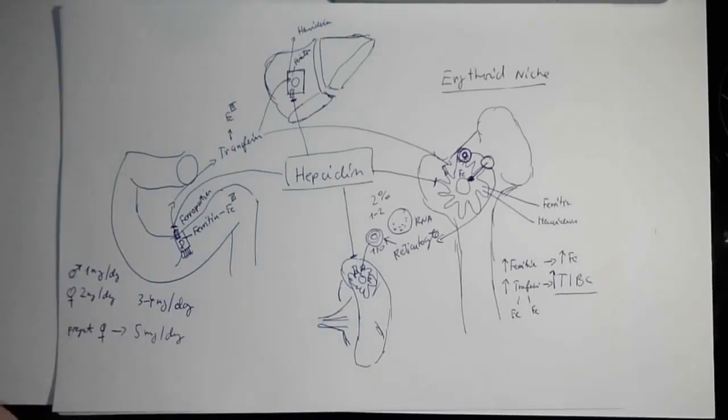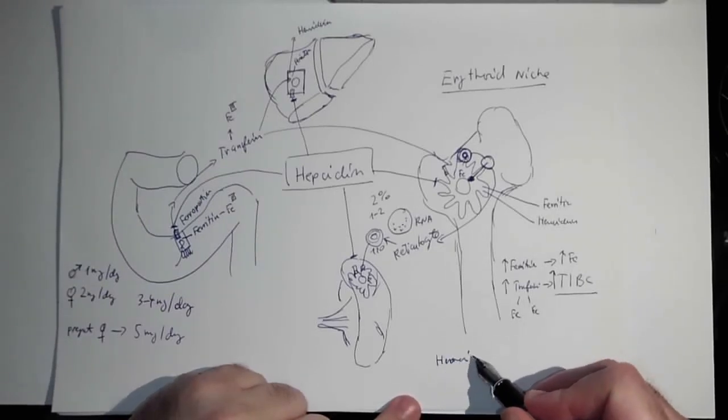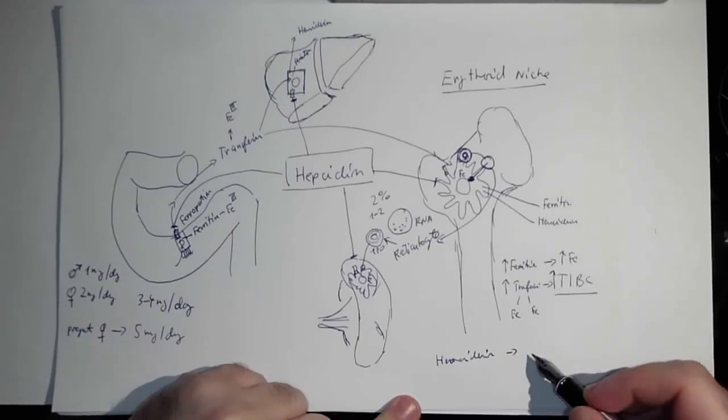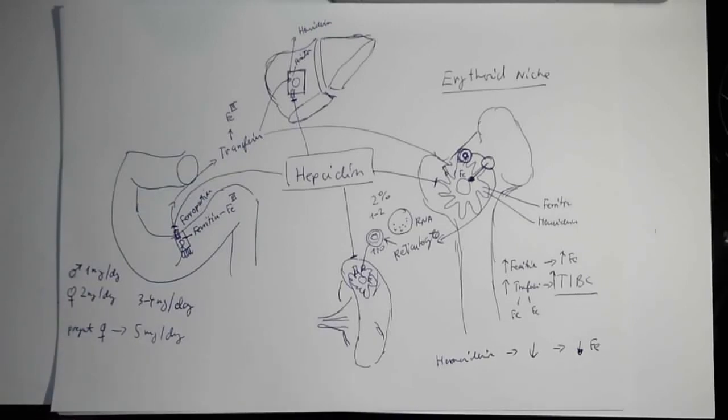Also, you can for example do a bone marrow puncture or suction and check for hemosiderin. And if this is decreased, that means there are no storages of iron in the bone marrow. So I guess out of this, I think this is enough.